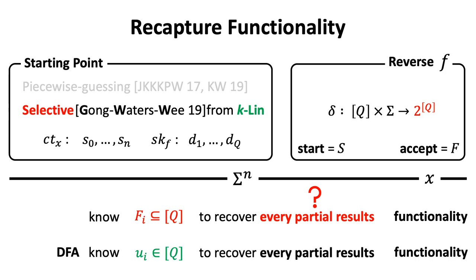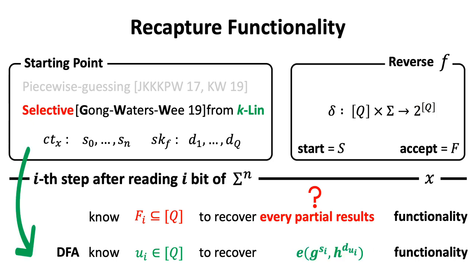In general, q states give q randomness in the key, and the n bit input gives n plus 1 randomness in the ciphertext. Then, in the i-th step,